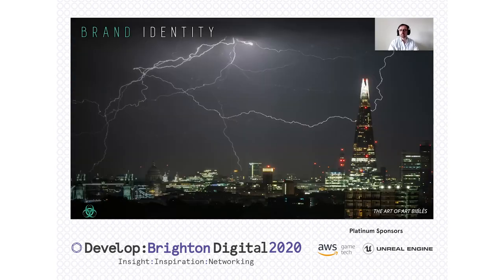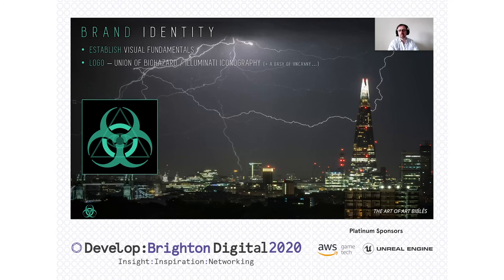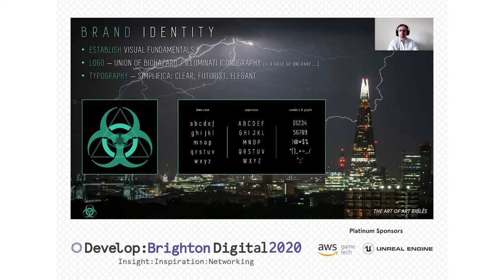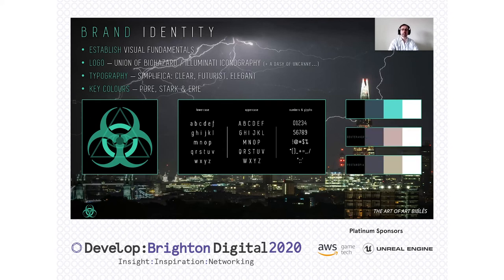For Project Alt, first we're developing our visual fundamentals — generally the logo. In this case I used the union of Illuminati and Biohazard icons with a dash of the uncanny. Typography-wise, I chose Simplifica because it's futurist and elegant. When it came to the key colours, I kept it fairly pure, stark, and maybe a touch of eerie — and it also works with colour blindness, which we'll come back to. There may be some dashes of accent colour when it comes to key effects or the UI.